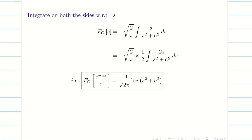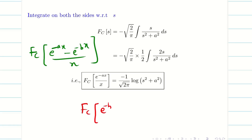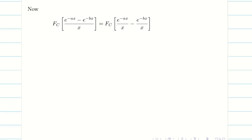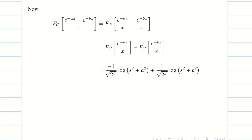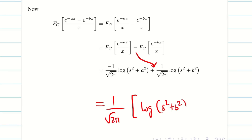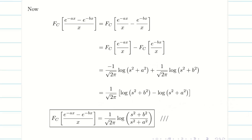We have found the first part of the problem. Now for the second part: find F_c of (e^(-ax) - e^(-bx))/x. For this we also need F_c of e^(-bx)/x, which we can write directly from the first result without re-deriving. Using the linearity property of the Fourier cosine transform, we split it as F_c(e^(-ax)/x) minus F_c(e^(-bx)/x). Substituting the values, minus times minus gives plus. Taking 1/√(2π) common, we get log(s²+b²) - log(s²+a²), which equals log((s²+b²)/(s²+a²)) using the log subtraction rule.